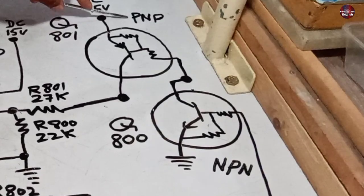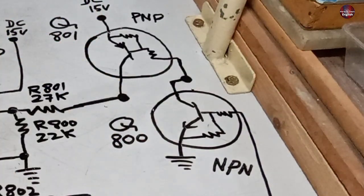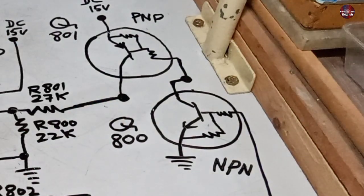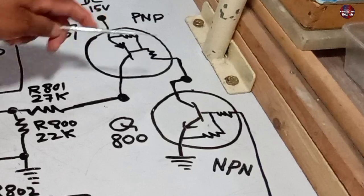One is a PNP, and the other is an NPN transistor in this circuit. The NPN transistor is grounded from the emitter pin, and the collector of the NPN is attached to the base of the PNP transistor. This way, it is working.